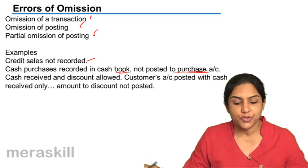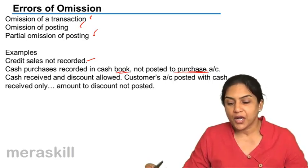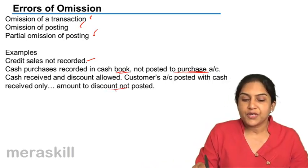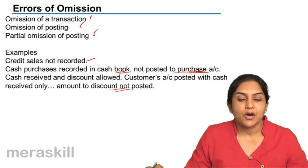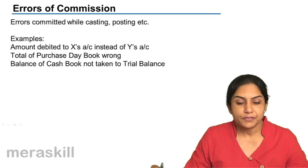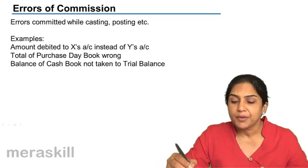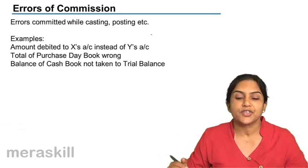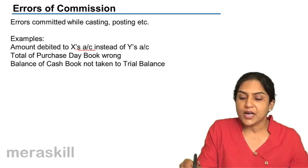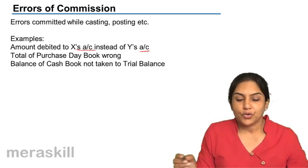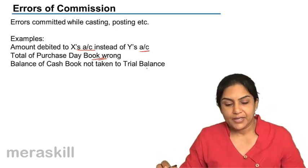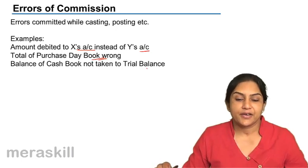Partial omission of posting: cash is received and discount is allowed, but the customer's account is posted with only the cash received and not the amount of discount. Errors of commission may occur while casting or while posting. For example: amount debited to X's account instead of Y's account, wrong total of the purchase day book, or the balance of the cash book not taken to the trial balance.